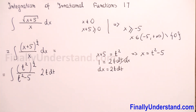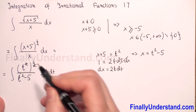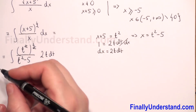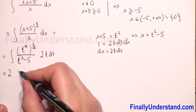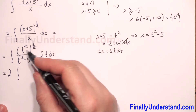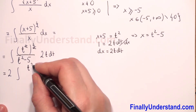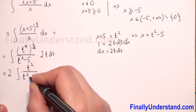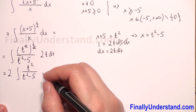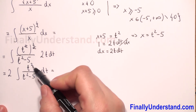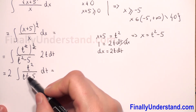We put the 2 before the integral symbol. So we have 2 times the integral of t times t — which is t squared — in the numerator, over t squared minus 5 in the denominator, dt. This simplifies because we have the same degree in the numerator and denominator.